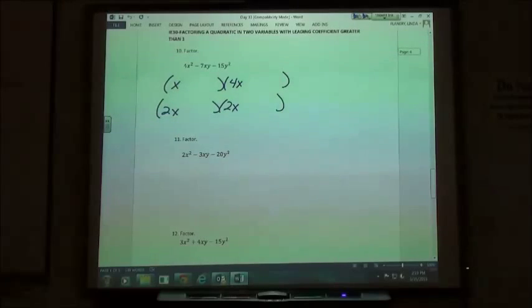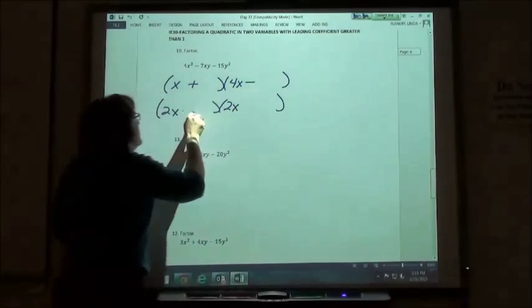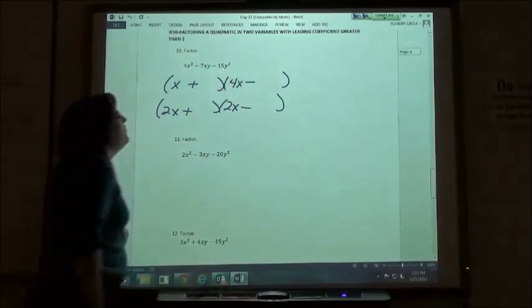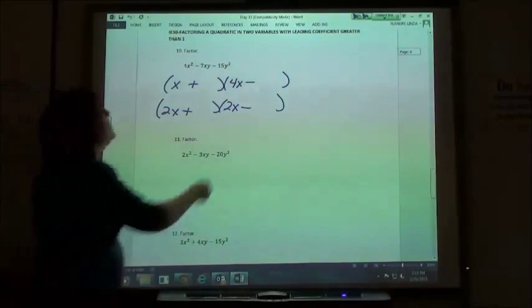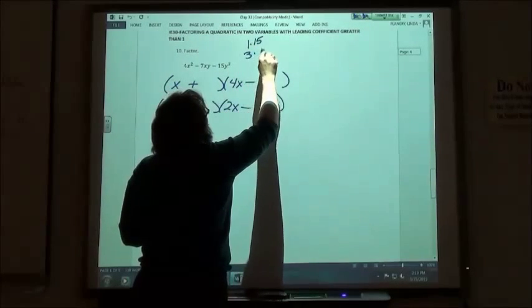My signs, my end is negative. If my end is negative, I have 1 plus and 1 minus. Factors of 15y squared. So 15 could be 1 times 15, but probably is the 3 times the 5.